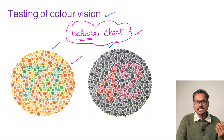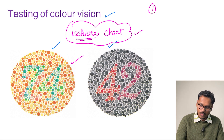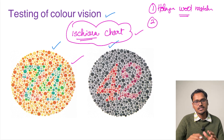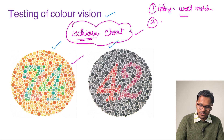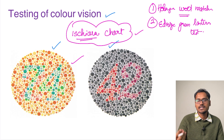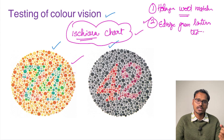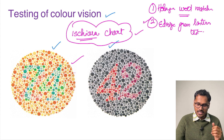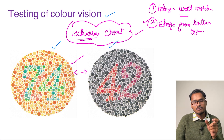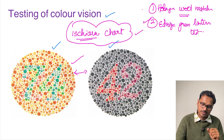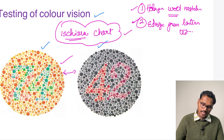Other tests for color vision include the Holmgren wool matching test, where a person matches a color of wool across a palette, and the Edridge-Green lantern test, where the color, hue, and intensity of a lantern can be changed and the person identifies the color. With Ishihara's chart, we can also differentiate mild, moderate, or severe types of color blindness.